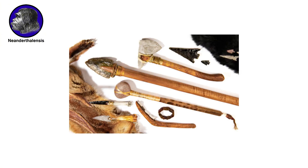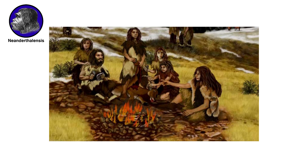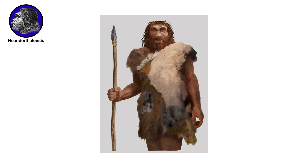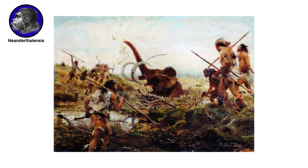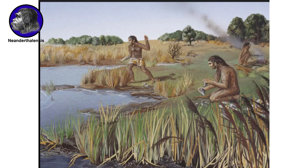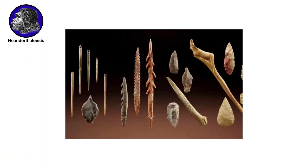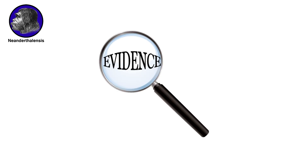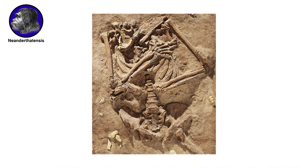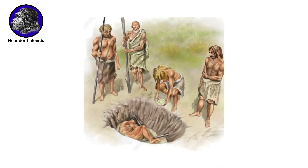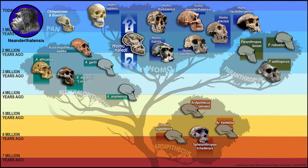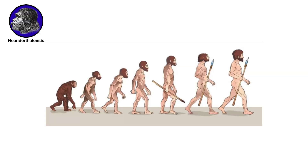Neanderthals made and used a diverse set of sophisticated tools, controlled fire, lived in shelters, made and wore clothing, were skilled hunters of large animals, and also ate plant foods, and occasionally made symbolic or ornamental objects. There is evidence that Neanderthals deliberately buried their dead and occasionally even marked their graves with offerings such as flowers. No other primates and no earlier human species had ever practiced this sophisticated and symbolic behavior.